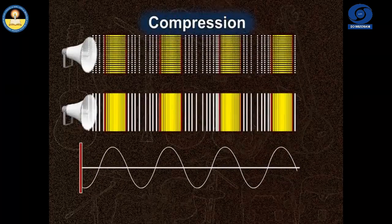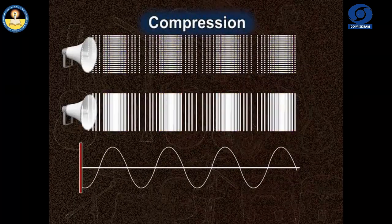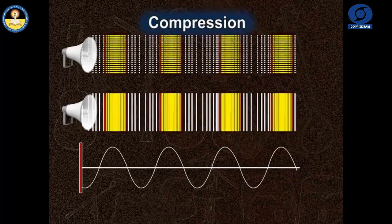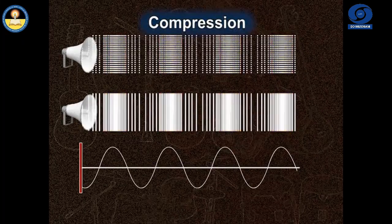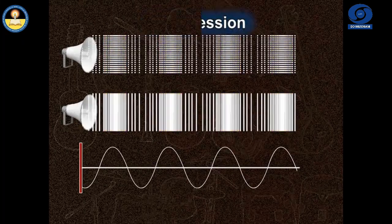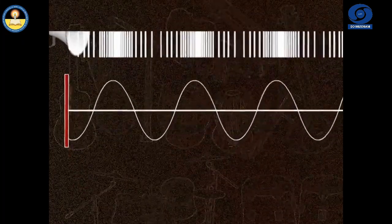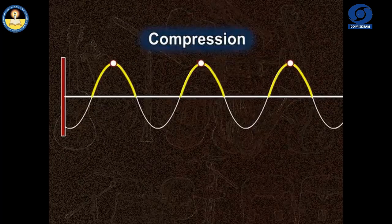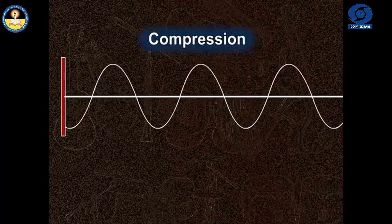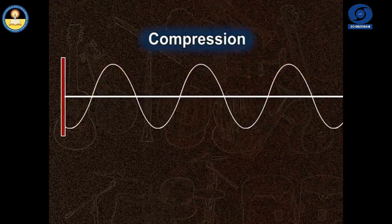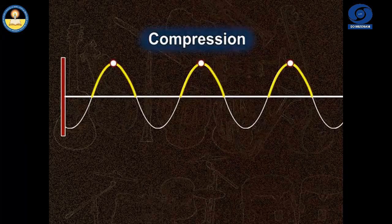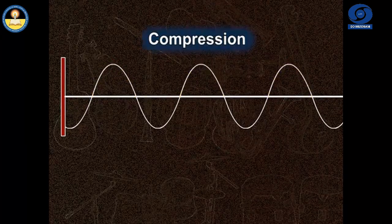Since the compressions are the regions where the pressure as well as the density is more than their normal values, such regions are represented by the upper portion of the curve and the peak represents the region of maximum compression.